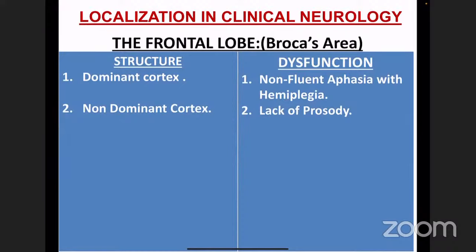If the dominant cortex — the left side — is affected at Broca's area, the patient will have non-fluent aphasia along with hemiplegia. Most components of language are on the dominant cortex; however, one component — prosody, that is intonation — is on the non-dominant cortex. For example, when greeting a friend excitedly you have inflections and melody; if that is absent and speech is flat, that is lack of prosody. If the non-dominant frontal lobe gets affected, speech becomes flat and monotone.